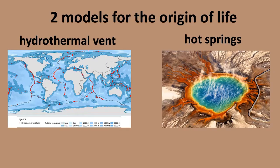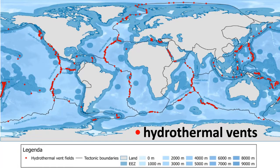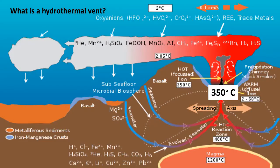Looking more closely at hydrothermal vents, they're located at the spreading centers where the plates are coming apart — shown here as red dots. Here's an example of the complex redox chemistry of 350 degrees centigrade water mixing with 2 degrees centigrade water. That quick cooling provides a lot of energy — redox energy — for life forms that might be able to take advantage of it.